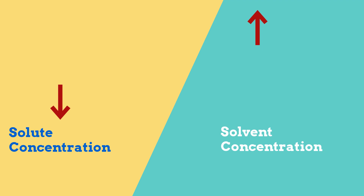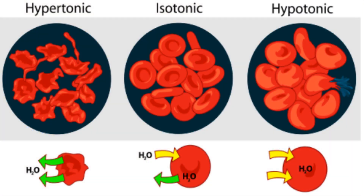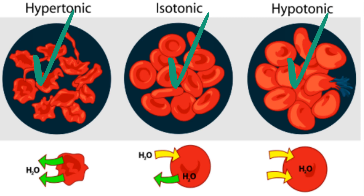So, let's look at this blood cell. In hypertonic, it gets smaller, or shrivels up. In isotonic, it stays the same. And in hypotonic, it gets larger. Let's see why.